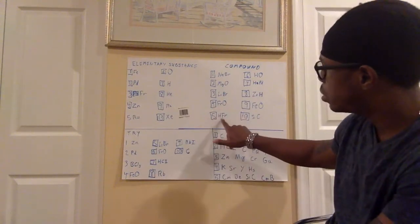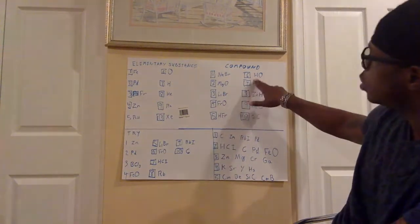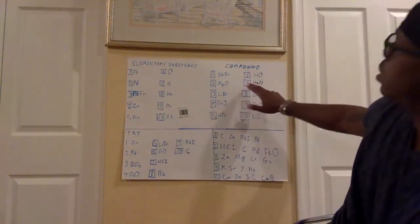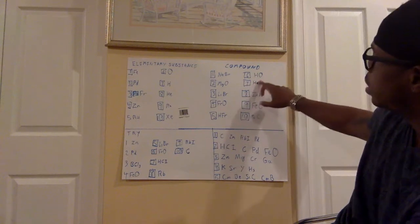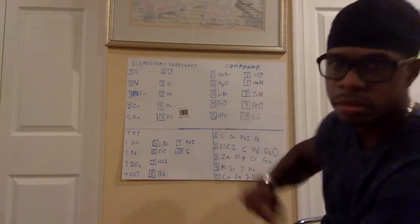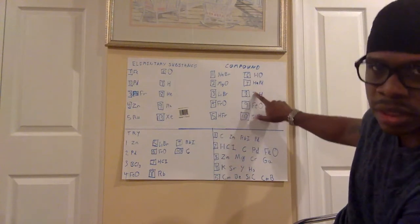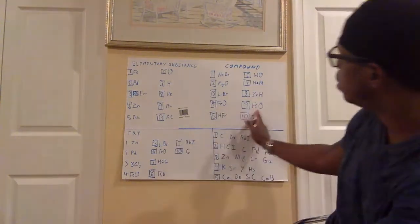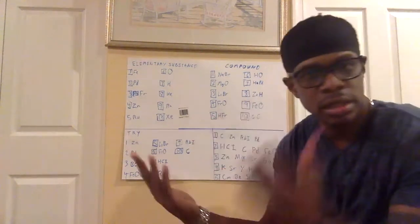Number five: capital H, capital F, small r. Hydrogen by itself is one atom, and Fr is one atom — two atoms. Number six: capital H, capital O — two atoms, H is one, O is one. Number seven: HePd. The e is common, so helium is one atom, and Pd is one atom — palladium — two atoms. Number eight: ZnH. The n is common, so Zn is one atom, and H is another — two atoms. Number nine: FeO. Fe — the e is common — so Fe is one atom, and O is one atom by itself. Iron and oxygen — two atoms.